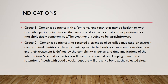Indications are divided into two groups. Group one comprises patients with a few remaining teeth that may be healthy or with reversible periodontal disease, coronally intact, malpositioned, or morphologically compromised — treatment is mostly straightforward. Group two has a diagnosis of mutilated or severely compromised dentition; these patients are heading toward edentulism and treatment is defined by complexity, expense, and time. Selected extractions are carried out, keeping in mind that retaining teeth with good alveolar support will preserve bone.